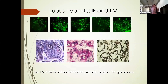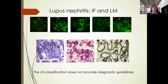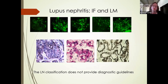Most of my lectures on lupus nephritis begin with a slide like this, showing that lupus nephritis is a disease which in the kidney is characterized typically by a full house pattern and a variety of light microscopic findings. The fact that lupus nephritis can reveal itself by so many different patterns is probably the reason why lupus nephritis was the first disease for which a classification was created.